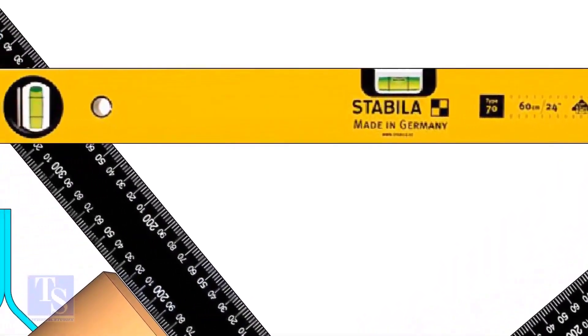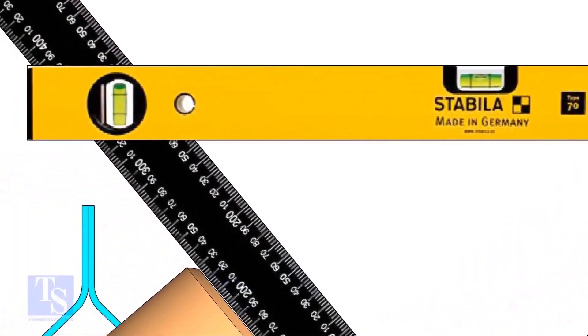Rotate the T, holding the right angle and the level bottle firmly, until the level bottle is in level.